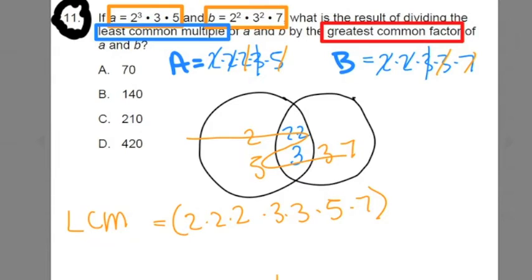Greatest common factor. Remember we said the greatest common factor is what's in your Venn diagram here? So I just literally, if you did the Venn diagram, we just copy what's in the center that they share. They both share the 2, two 2's, and a 3.